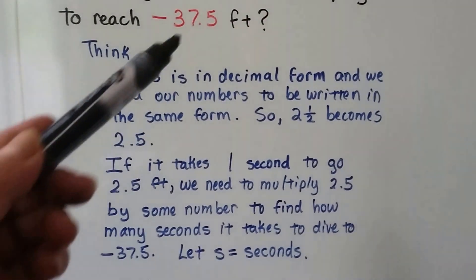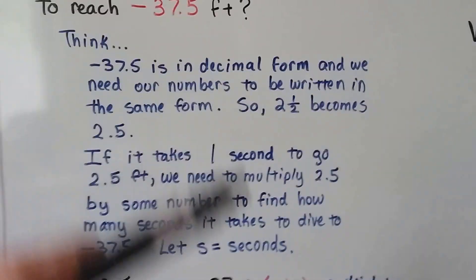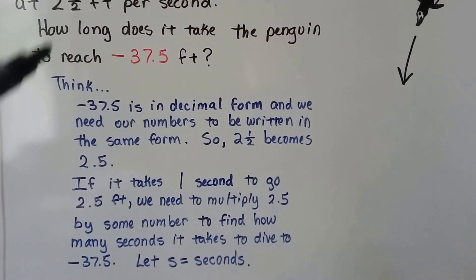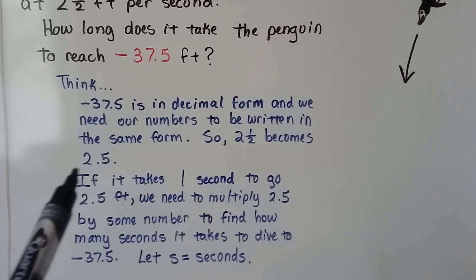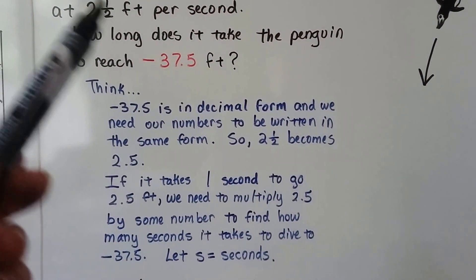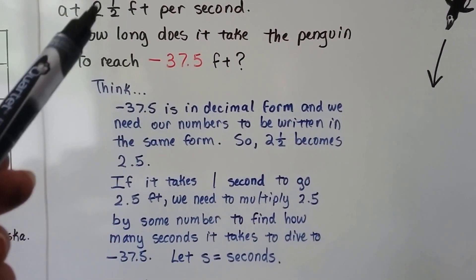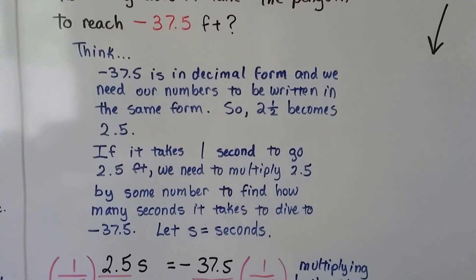So, we've got this decimal, negative 37.5. And we need our numbers to be written in the same form. This is two and a half. So, the two and a half becomes 2.5. That way, we have them written in the same form. They're both written in decimal form.